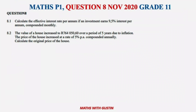Let's look at Question 8, November 2022, Grade 11. It was a financial mathematics question, divided into three parts from 8.1 up to 8.3. Please watch until the end so you can see Question 8.3. Now 8.1 says: calculate the effective interest per annum if an investment of 9.8% is compounded monthly — so this is what we call nominal interest.